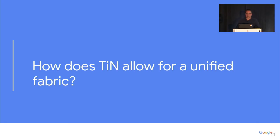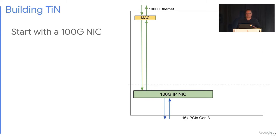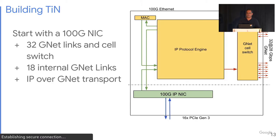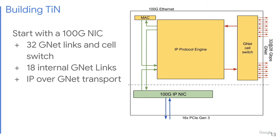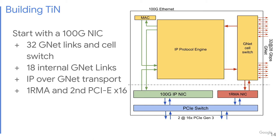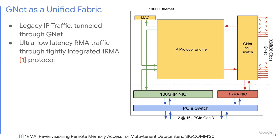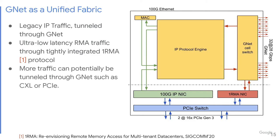How did we build this unified fabric? Let's zoom in on the TIN. We start with an IP NIC connected to the host using a PCIe link, as well as another Ethernet link. Then we add a GNET switch that connects to the rest of the Dragonfly, and 18 internal links connected to the protocol engines. One is an IP protocol engine that cellifies packets into cells sent over GNET. Another is the 1RMA NIC that provides RMA primitives. It needs more bandwidth, so we added another PCIe link connected to a PCIe switch. This way, GNET works as a unified fabric for IP traffic tunneled through GNET as well as native 1RMA traffic — and we envision GNET can also be used for tunneling CXL or PCIe traffic.